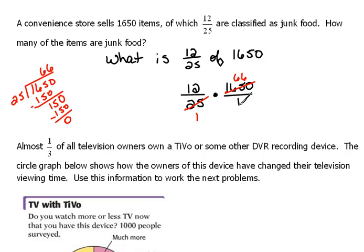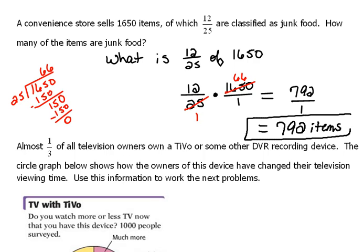Nothing else will cancel, so our answer is 12 times 66. 66 times 12 is 792, and 1 times 1 is 1. We don't need to put anything over 1—that's just 792 items. So 792 items is 12/25 of 1650.